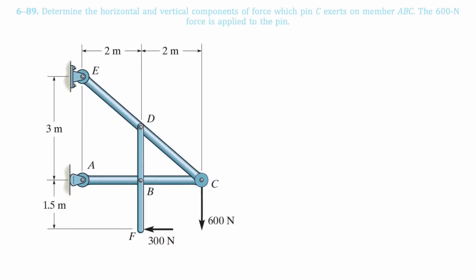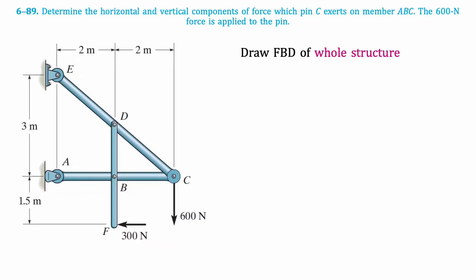First, we'll draw the free body diagram for the whole structure. E is a pin, so there will be X and Y components, while at A there is a roller, so there will only be an X component.